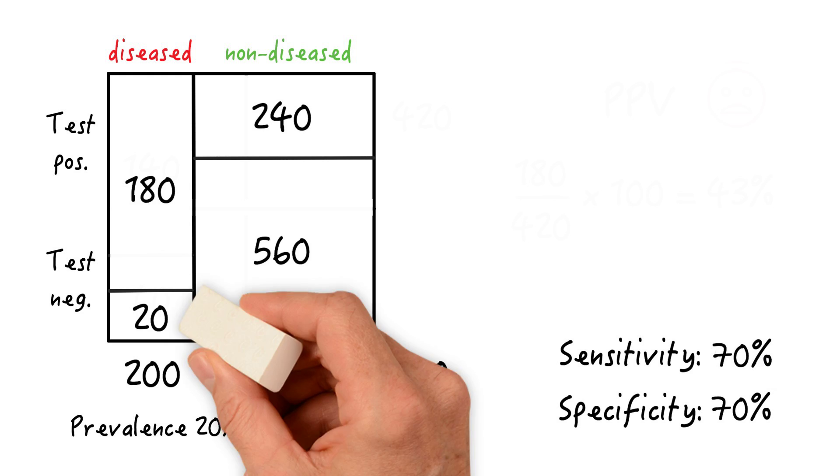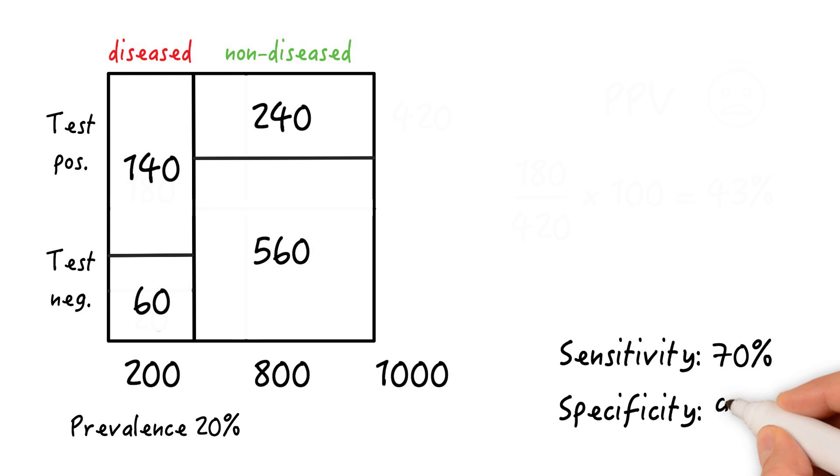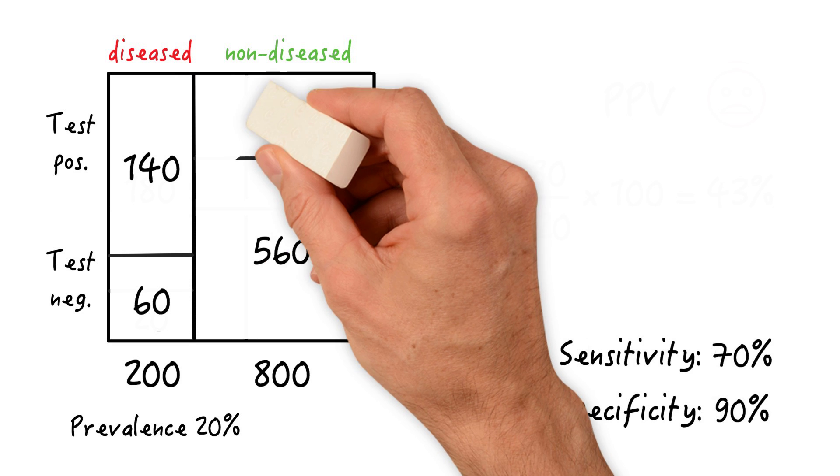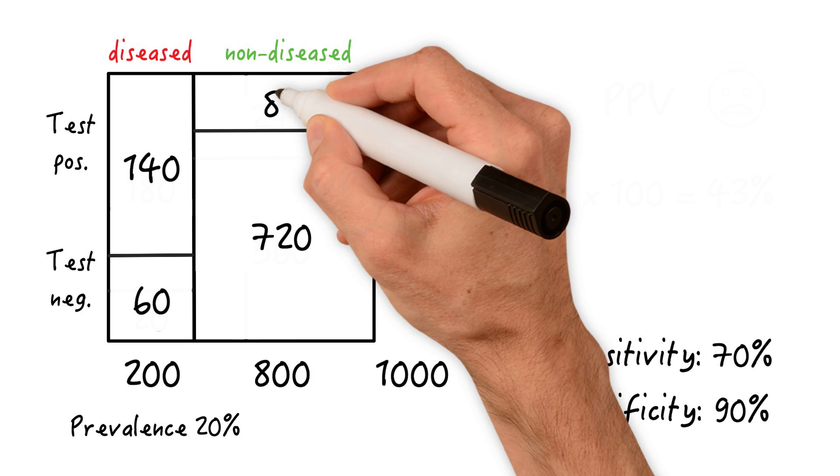Now let's see what happens if we take our initial numbers and change the specificity from 70 to 90%. So in this case, the left side stays the same since sensitivity is left unchanged at our initial 70%. Now, we're correctly diagnosing 90% of non-diseased, or 720 people, and we're going to get 80 false positives.